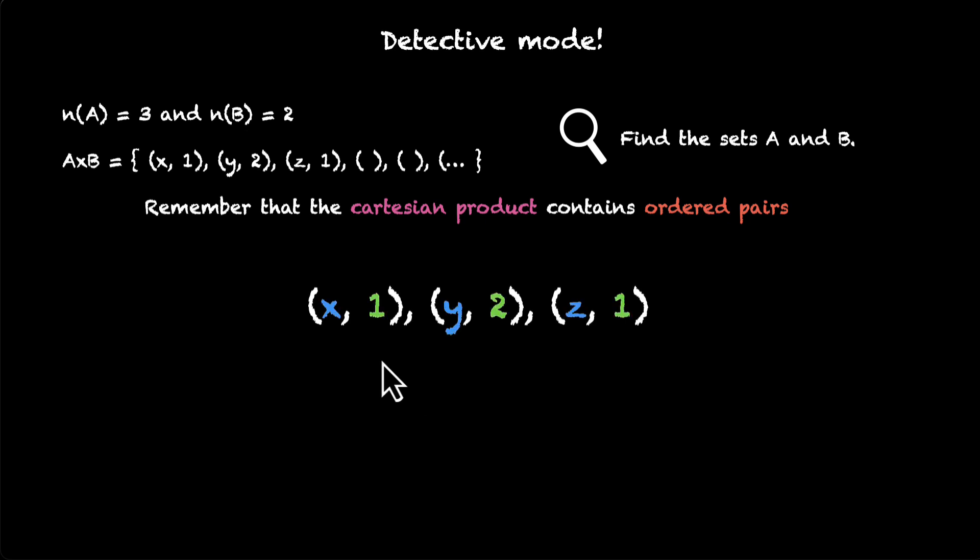So x, y, z, and 1, 2, they're coming from sets A and sets B. Can we now solve this puzzle? Okay, let's see. A will have x, y, and z. That's going to be our set A. And because we know that A has three elements, this matches what we see here. x, y, and z, these are the three elements.